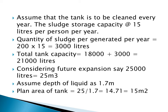We assume the tank is cleaned every year. The sludge storage capacity is assumed as 15 liters per person per year. If not given, you can assume a value between 15 to 30 liters per person per year. The quantity of sludge generated per year is 200 multiplied by 15, which equals 3,000 liters. To the tank capacity of 18,000 liters, you have to add these 3,000 liters for sludge deposition.